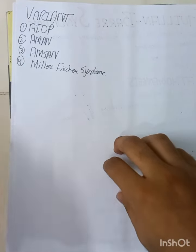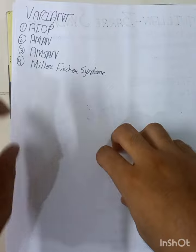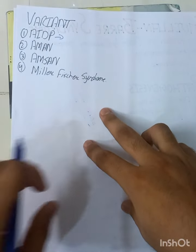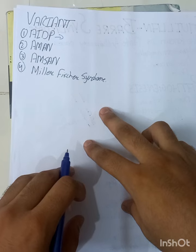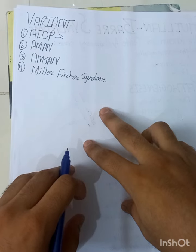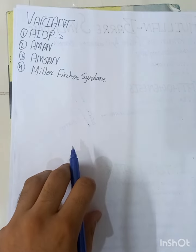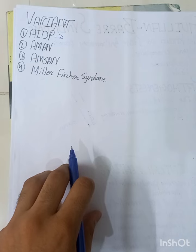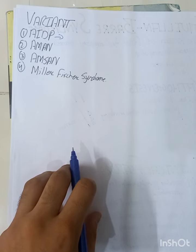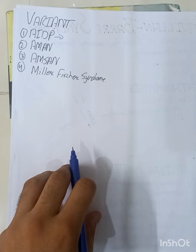The types of Guillain-Barré syndrome: the most common type is AIDP — Acute Inflammatory Demyelinating Polyradiculoneuropathy. Other types include AMAN (Acute Motor Axonal Neuropathy) and AMSAN (Acute Motor Sensory Axonal Neuropathy), in which both motor and sensory neurons are involved.